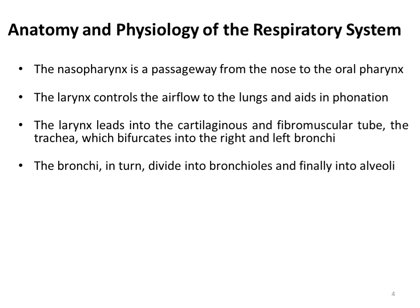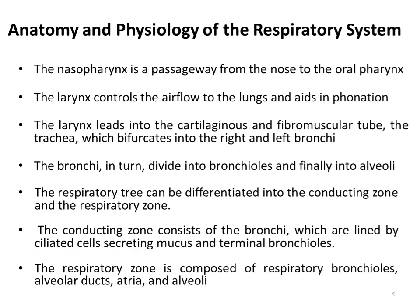Anatomy and physiology of the respiratory system. When we are giving a medicine to the system by pulmonary route, we need to know the anatomy and physiology of the respiratory system as well as the lungs, which is the main organ in the pulmonary route. The nasopharynx is the passageway from the nose to the oral pharynx. The larynx controls the air flow to the lungs and aids phonation, that is speech. The larynx leads into a cartilaginous and fibromuscular tube called trachea, which bifurcates into right and left bronchi.